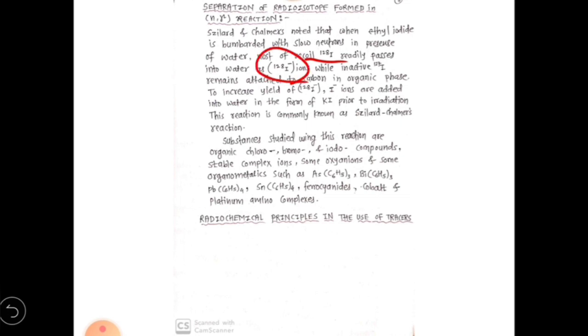This iodine-128 recoil—most of it passes into iodide ion I-128 ion in water, and the remaining gets attached or remains attached to the organic phase, that is carbon. Now, one more way to increase the concentration of this I-128 minus in the aqueous phase is to add iodide ion externally, that is in the form of potassium iodide. We can add KI in the water before bombardment.